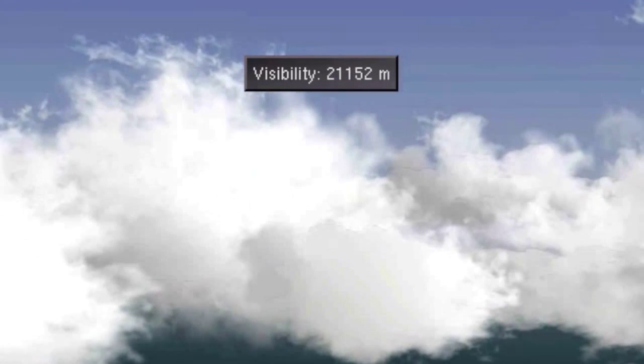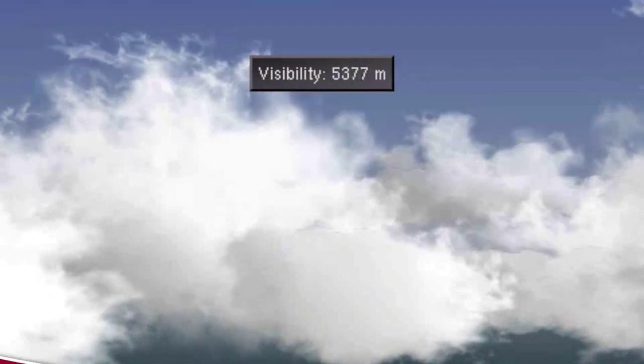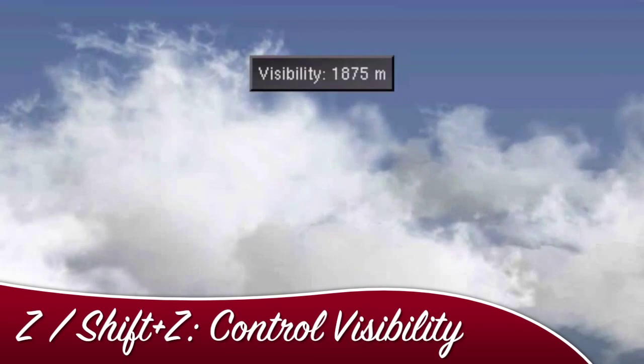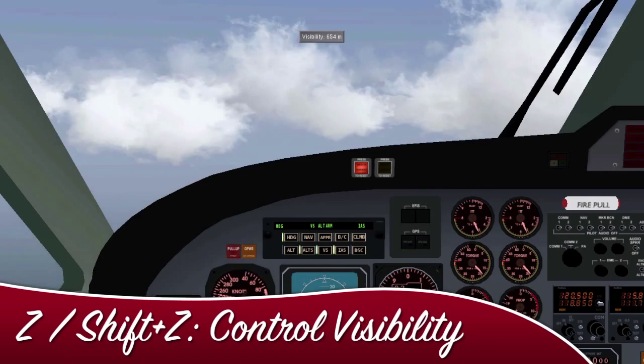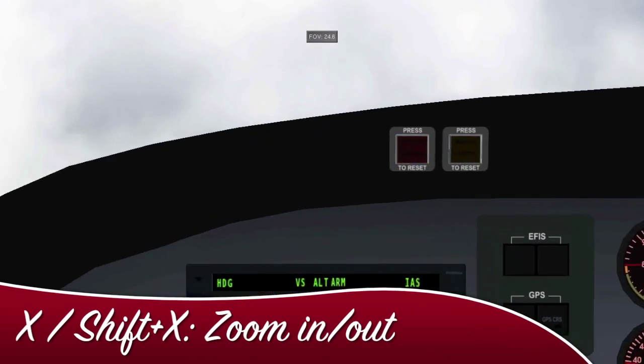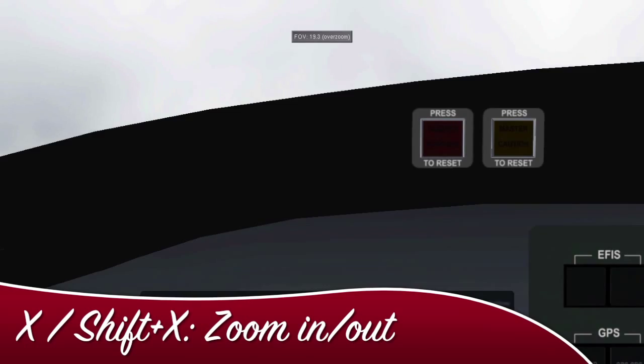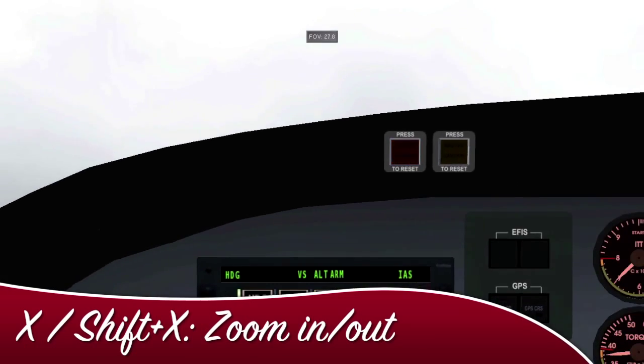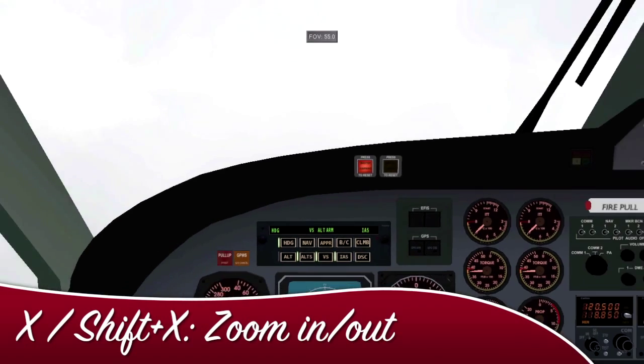The Z key can be used to increase visibility outside, and Shift+Z to decrease it. Use X to zoom in, or Shift+X to zoom out.